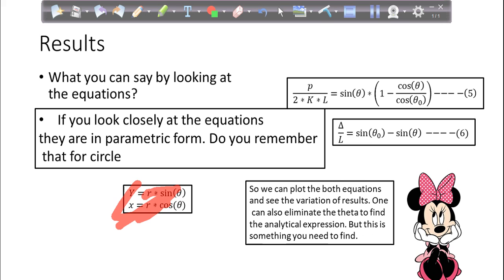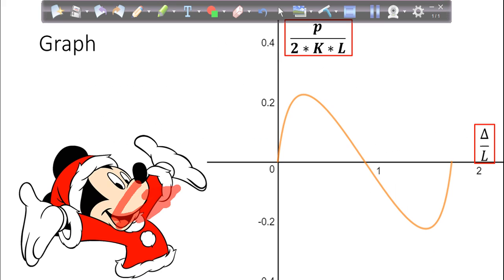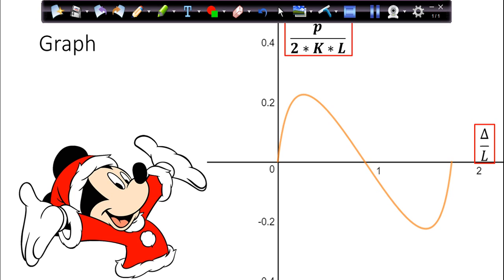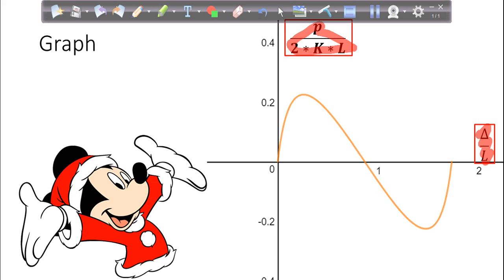So if you plot both equations and see the variation of results, one can also eliminate the theta to find the analytical expression. But this is something you need to find. Now we are plotting. And this is the graph that you will get when you plot the result. Now can you relate? So here, what is our x and y-axis? Whatever is the constant. P equals 2K into L and delta by L. So you can see how it is varying and what are the results that we have got. The range is between theta naught to theta and theta to theta naught. Even if you take any theta naught, you will get your result.